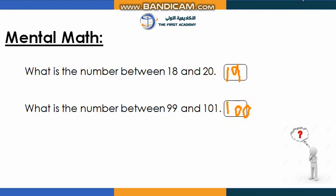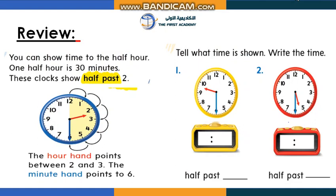Let's revise what we learned in the previous weeks about time to the half hour. In the analog clock there are two hands: one for the hour and one for the minute. The hour hand points between two and three, and the minute hand points to six. If you want to read the time properly, look at the short hand first, then move to the long one.